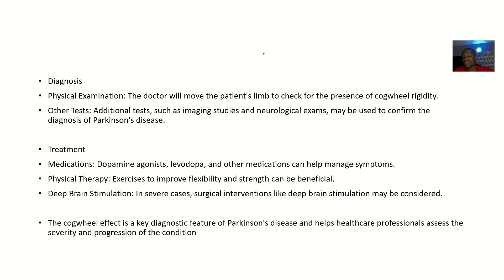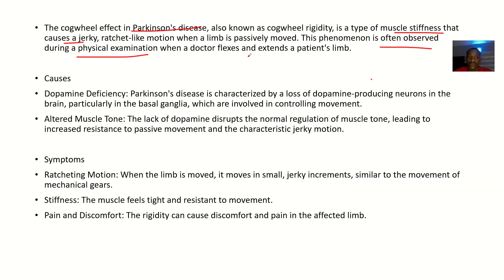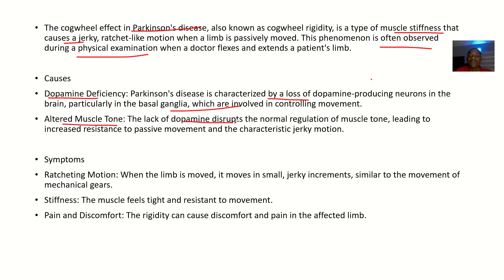The causes include dopamine deficiency. Parkinson's disease is characterized by a loss of dopamine-producing neurons in the brain, particularly in the basal ganglia, which are involved in controlling movements. It can also be due to altered muscle tone — the lack of dopamine disrupts normal regulation of muscle tone, leading to increased resistance to passive movement and the characteristic jerky motion seen in cogwheel effect.